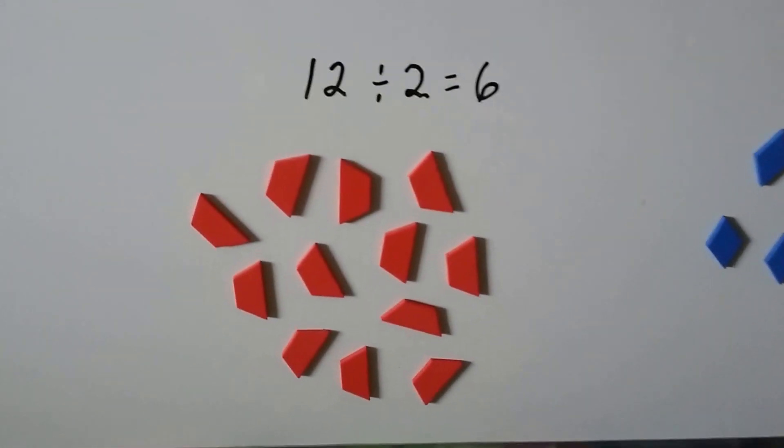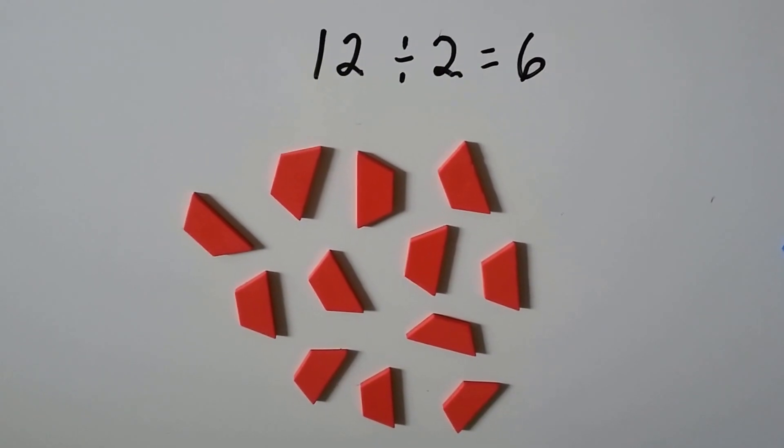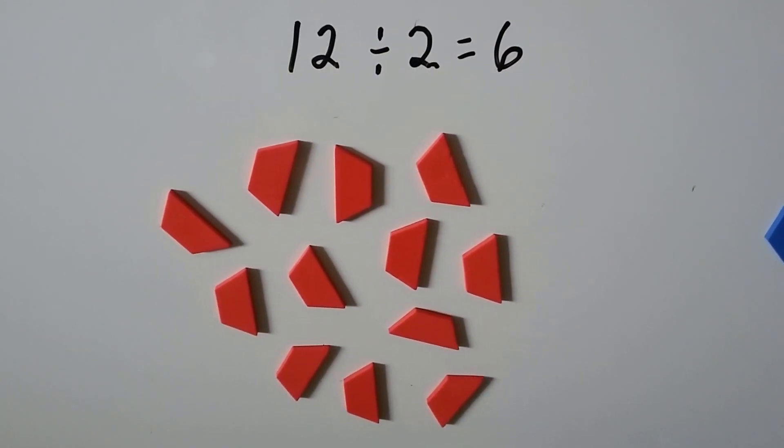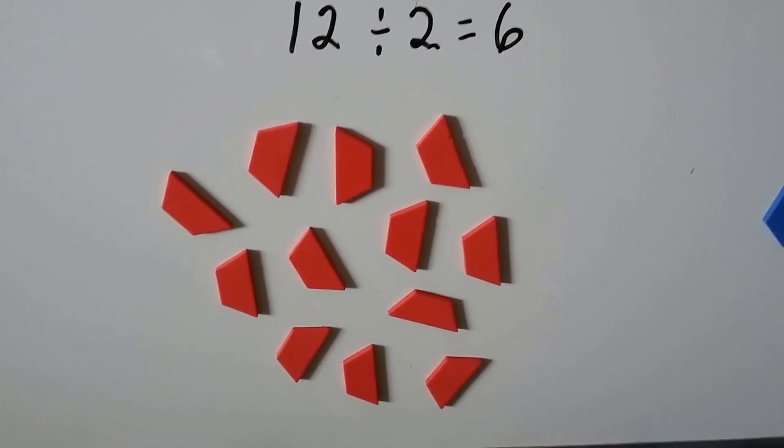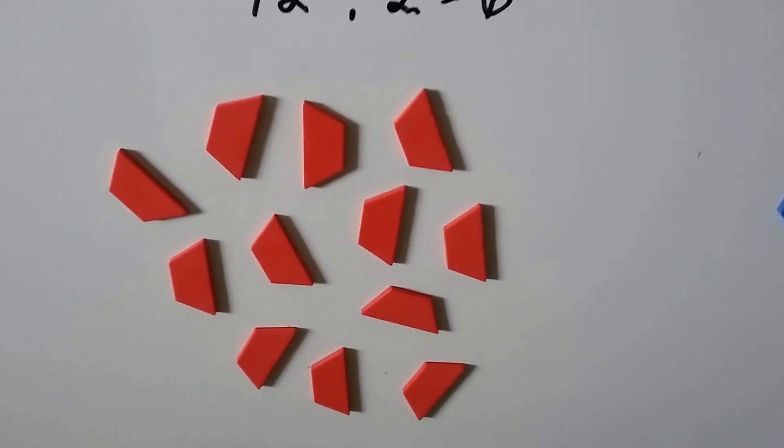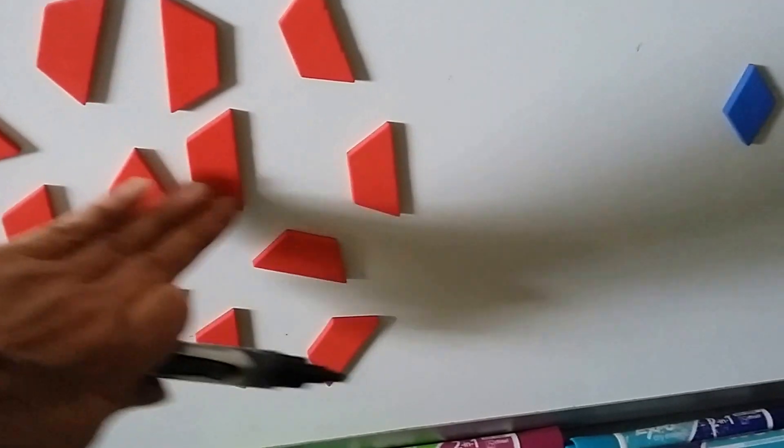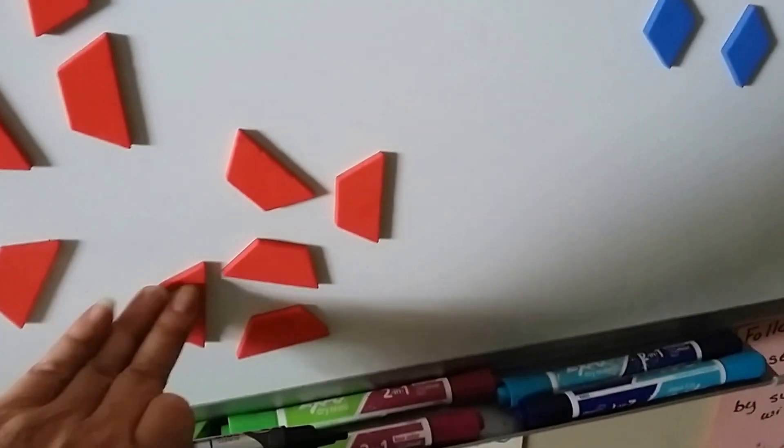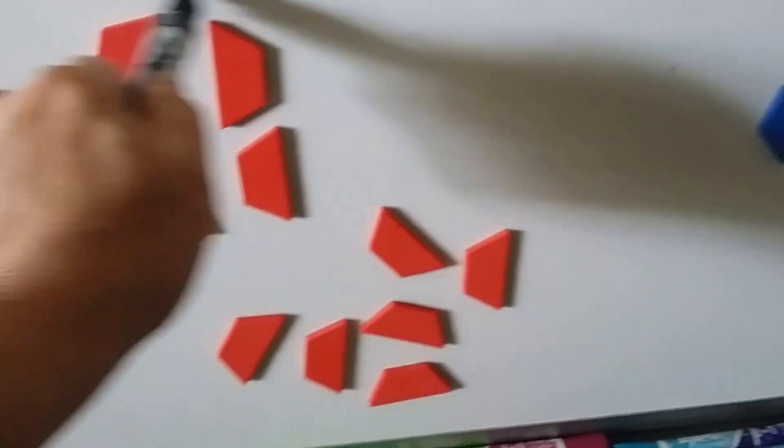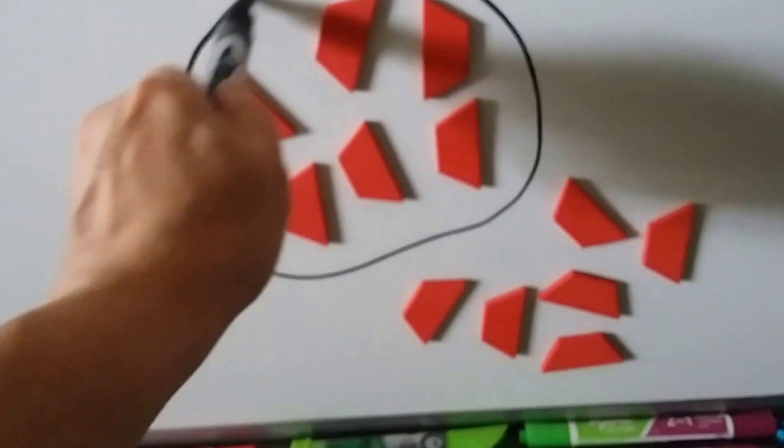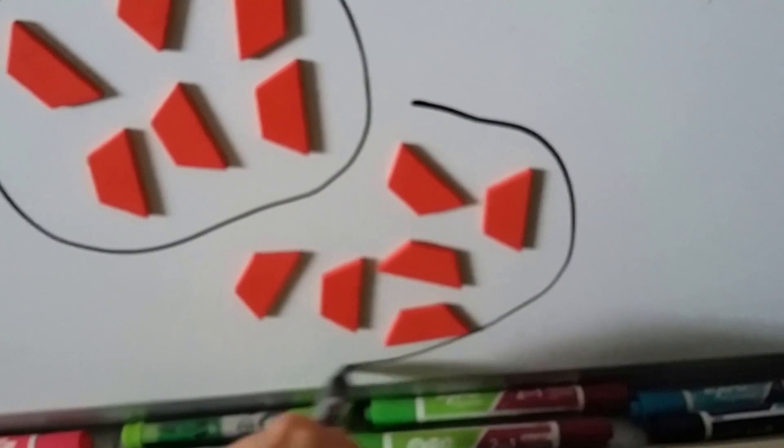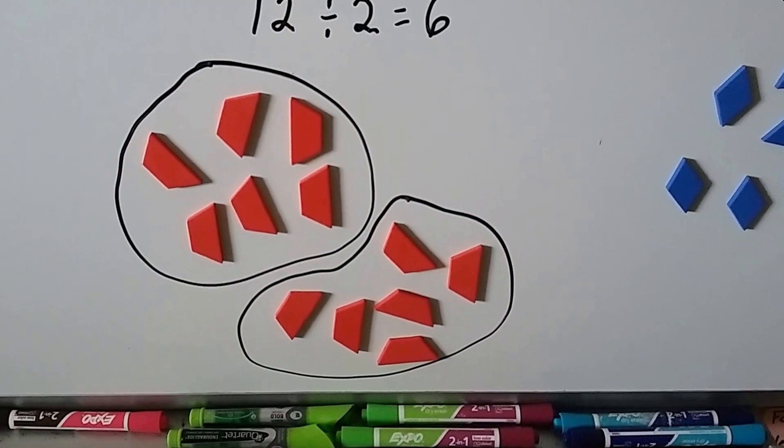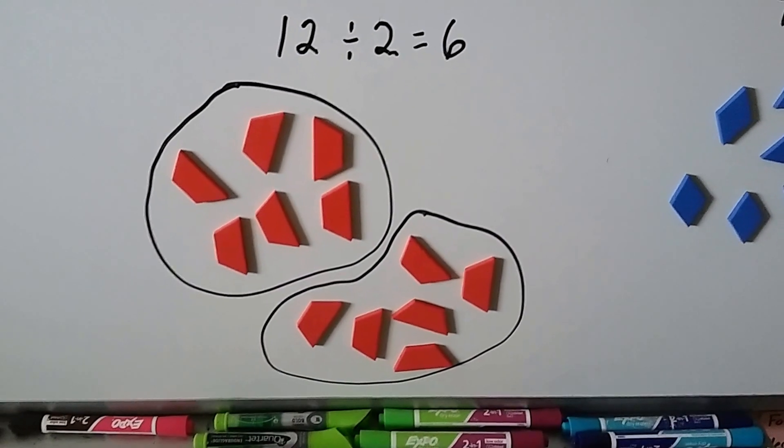Now take a look at this one. We've got twelve red shapes. If we divide it into two groups, we should have six in each group. Well, let's see. We'll put six in this group, and six in this group. Twelve divided by two equals six.